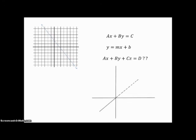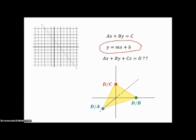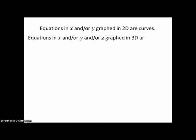If y and z are both zero, we get a point on the x-axis at d divided by a. Likewise, if x and z are zero, we get the point on the y-axis at d divided by b. And if x and y are zero, we get z equals d, a point on the z-axis. These three points are not in a straight line — this equation defines a plane, with a triangular region in the first octant. Equations in x and/or y and/or z graphed in three dimensions will be surfaces, not lines or curves.